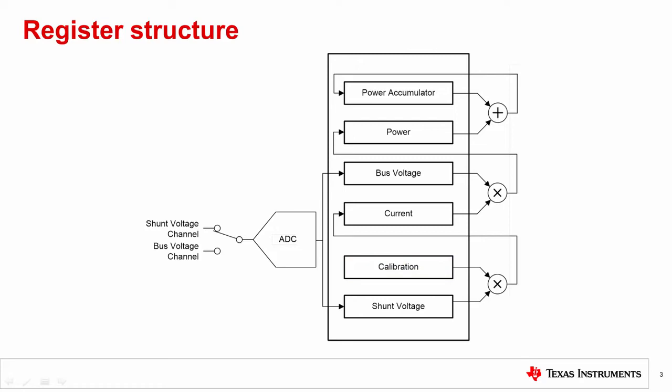If direct current and power readings are required, then the calibration register must be programmed. The current register is obtained by multiplying the contents of the shunt voltage register and the calibration register, then dividing by a constant for scaling purposes.